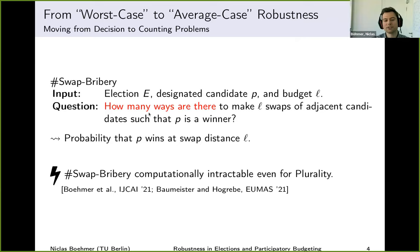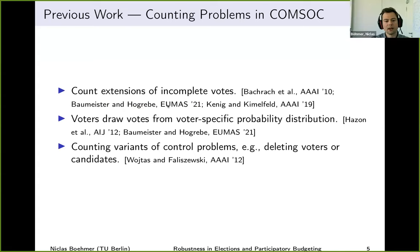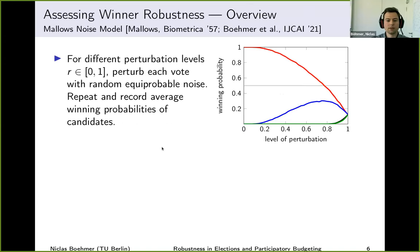We use a slightly different approach. We are not the first to look at counting problems in computational social choice, although these problems are relatively rare and haven't been studied often — which is unfortunate because they are fun theoretically and sometimes capture more realistic aspects than decision problems. The main three settings studied are: counting extensions of incomplete votes, general models where each voter has its own probability distribution over votes, and counting analogs of control problems.